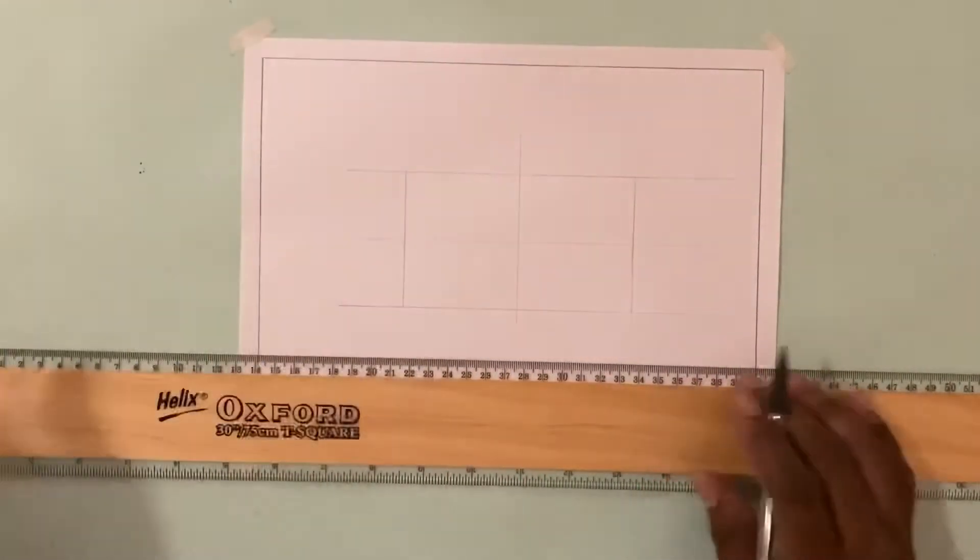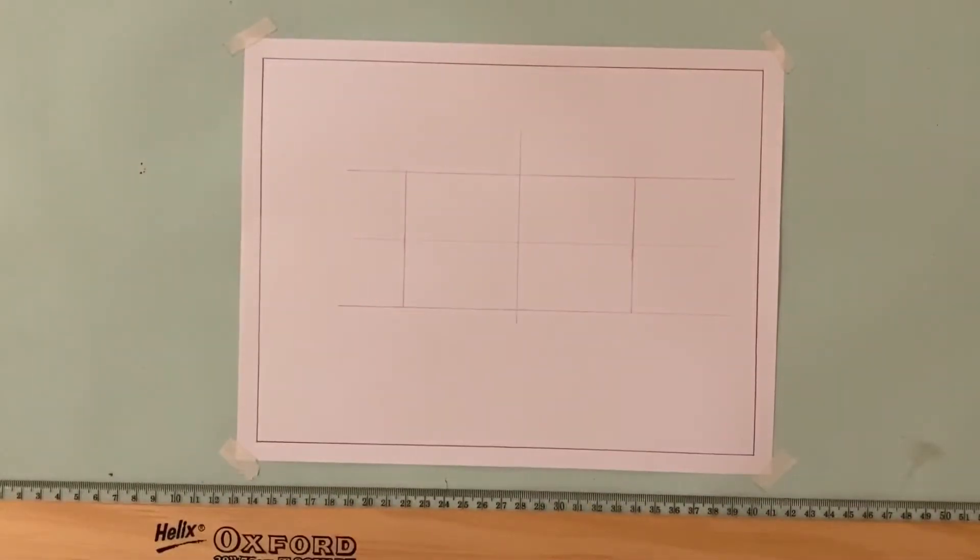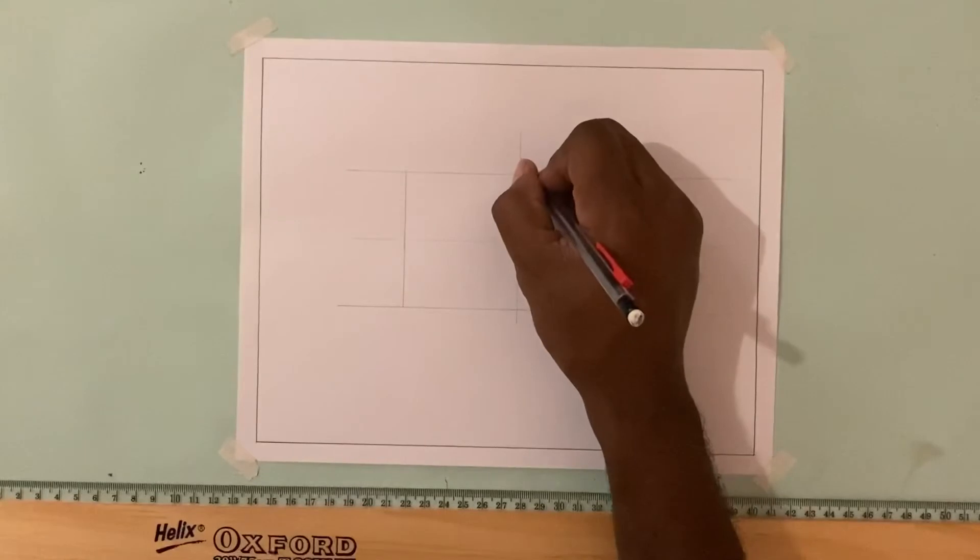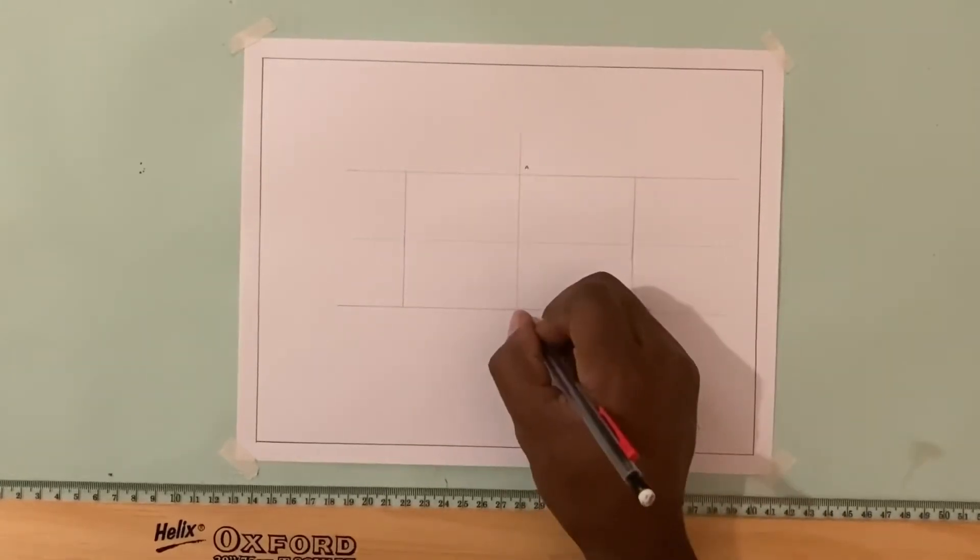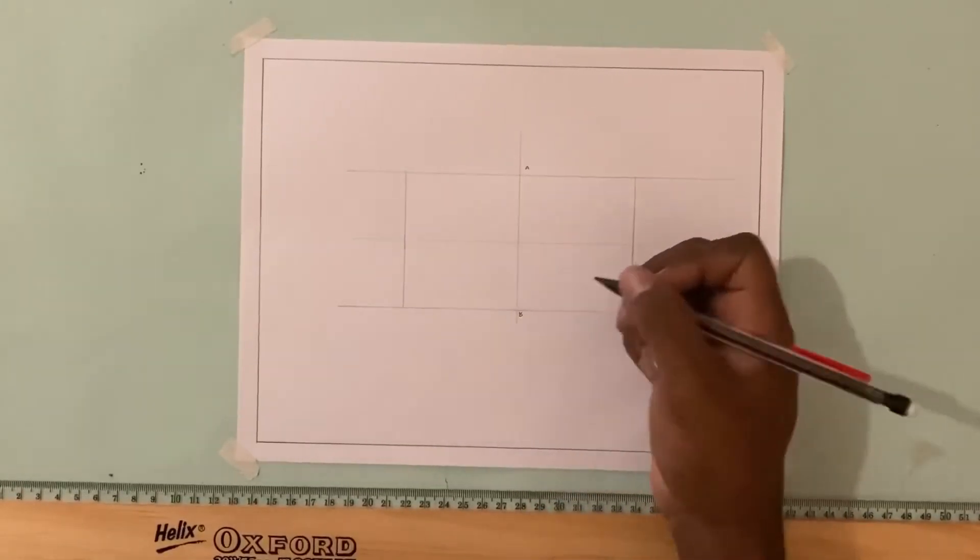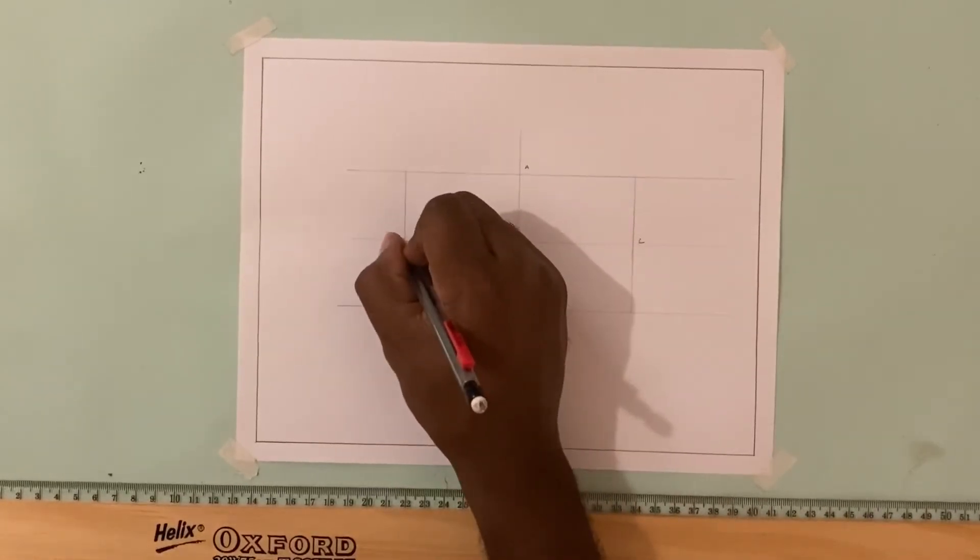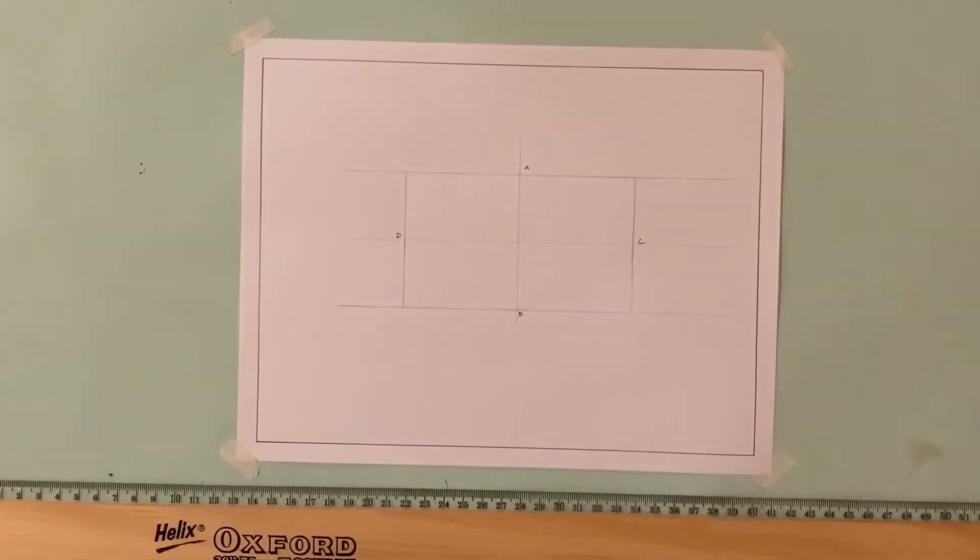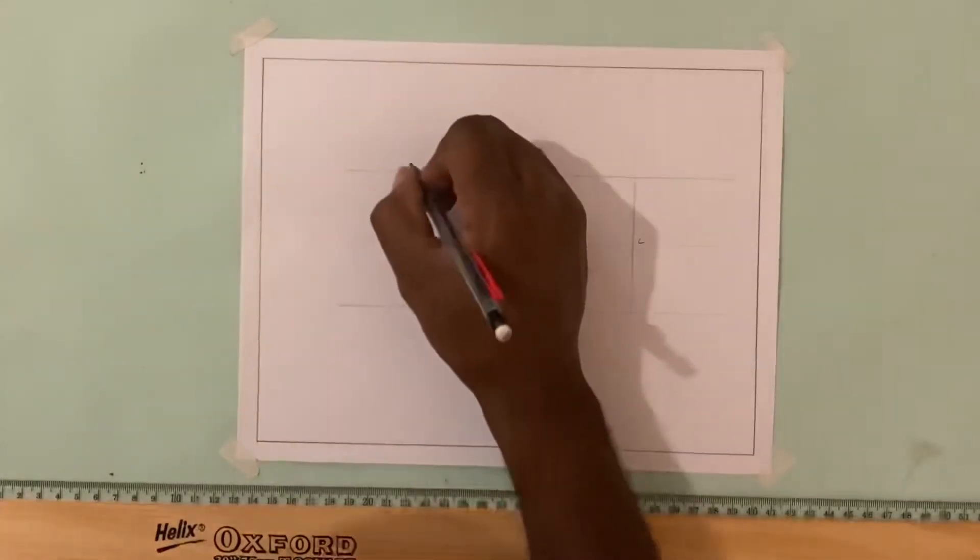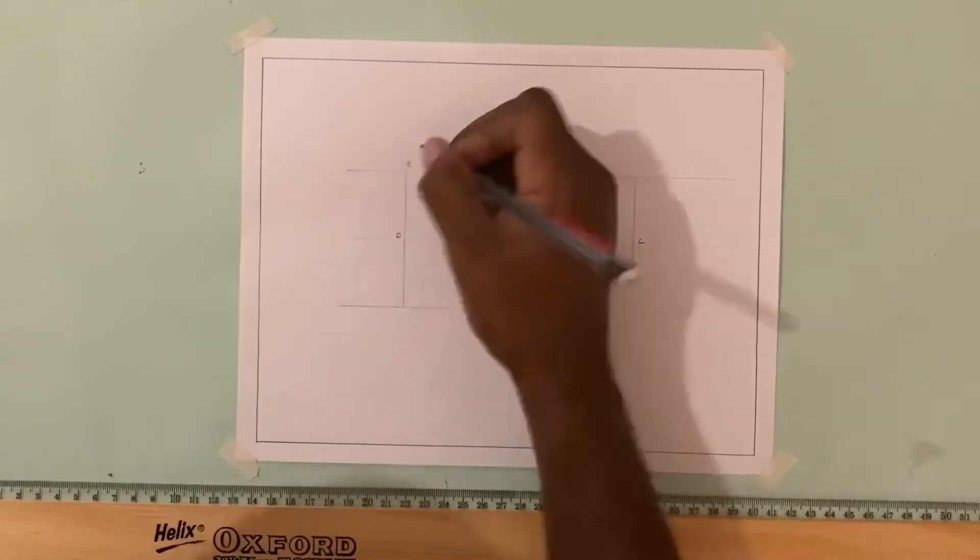Now I'm going to just go ahead and label some of these points on my rectangle. I'm going to label the other points of my rectangle as E, G, F, and H.